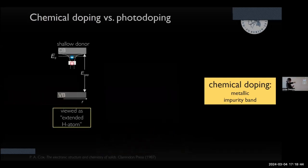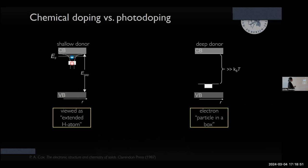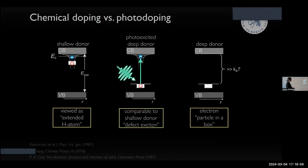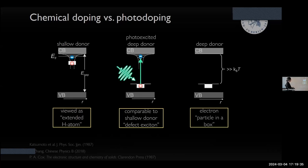Let's get back to chemical doping and shallow donors. There are also deep donors, which usually do not contribute to conduction because the energy barrier is too high. But you can photo-excite deep donors and create so-called defect excitons. The electron in these defect excitons acts like a shallow donor — suddenly, by photo-excitation, you can create a situation very much like chemical doping. In the correlated community there is a lot of talk about photo-doping; this is the only true analogy to chemical doping.